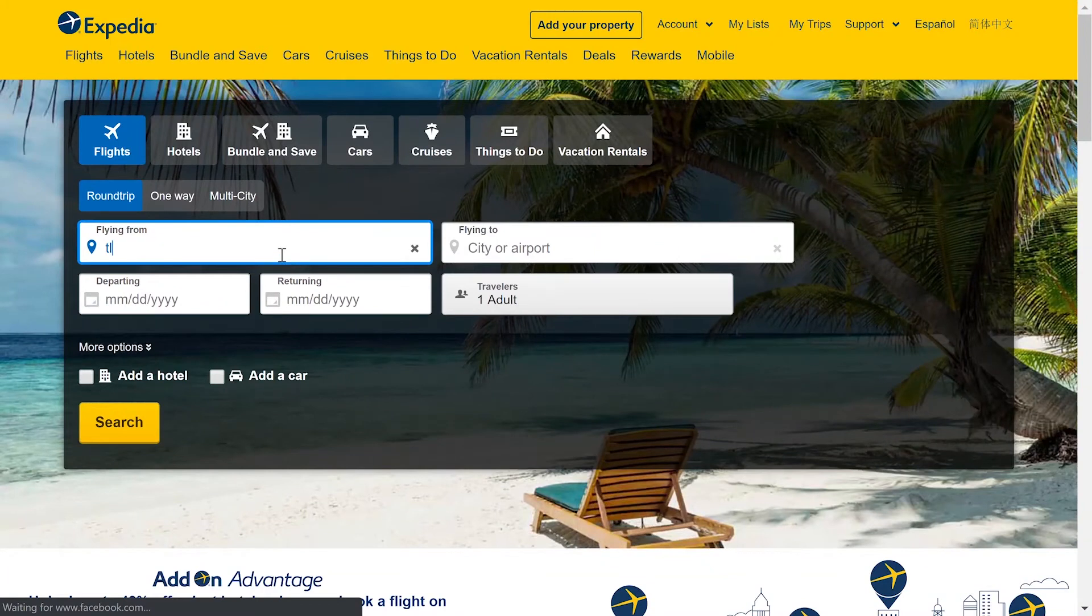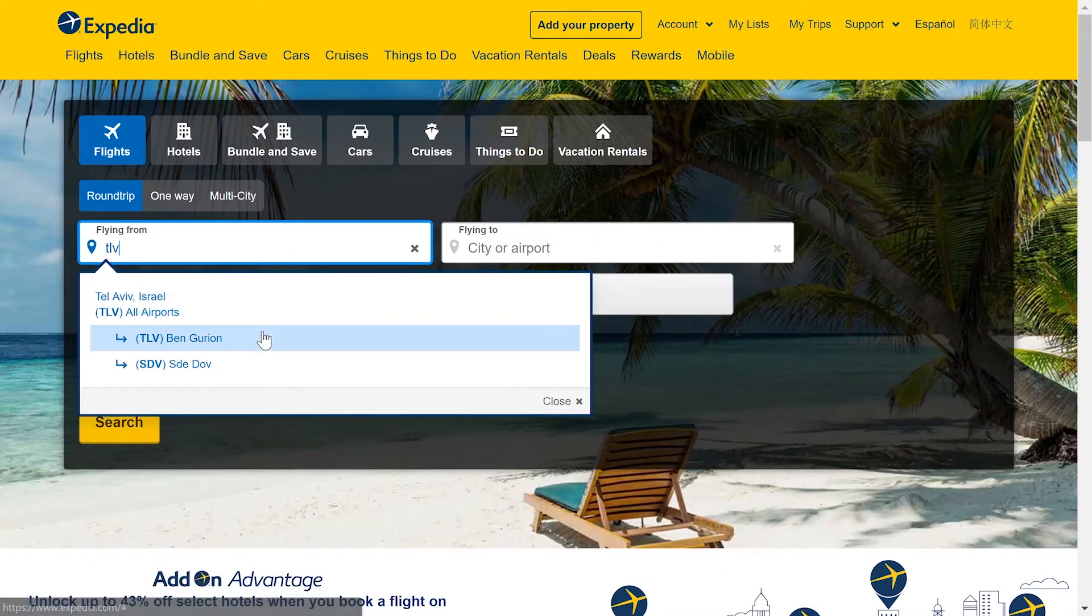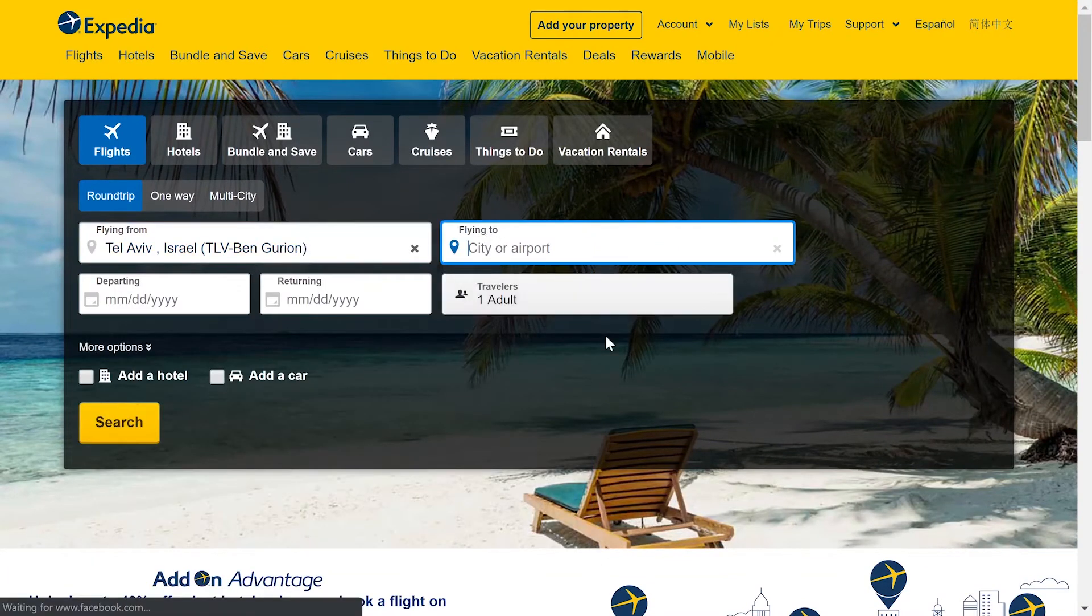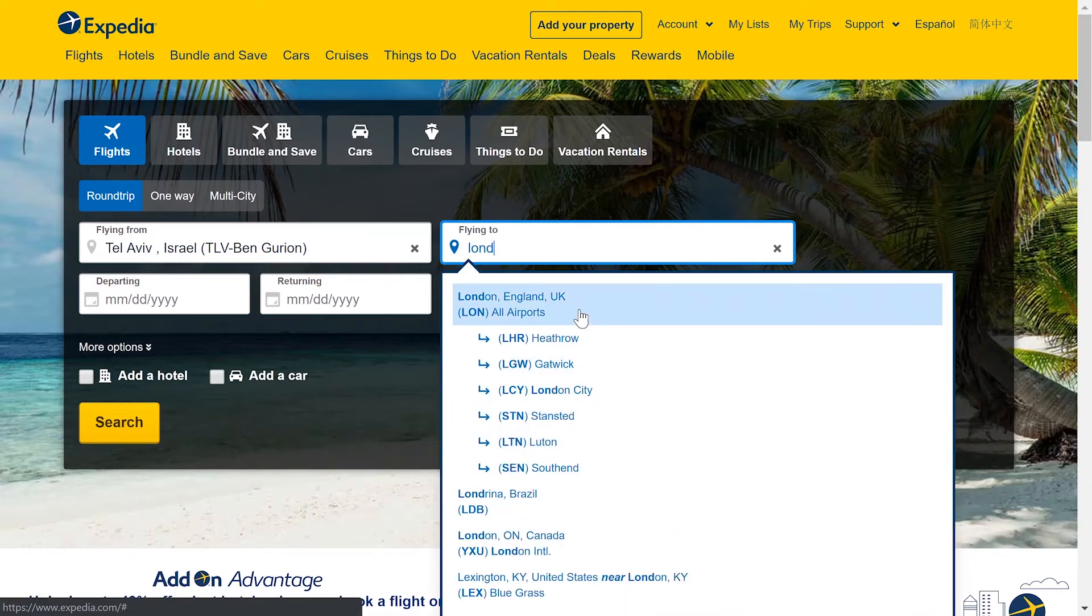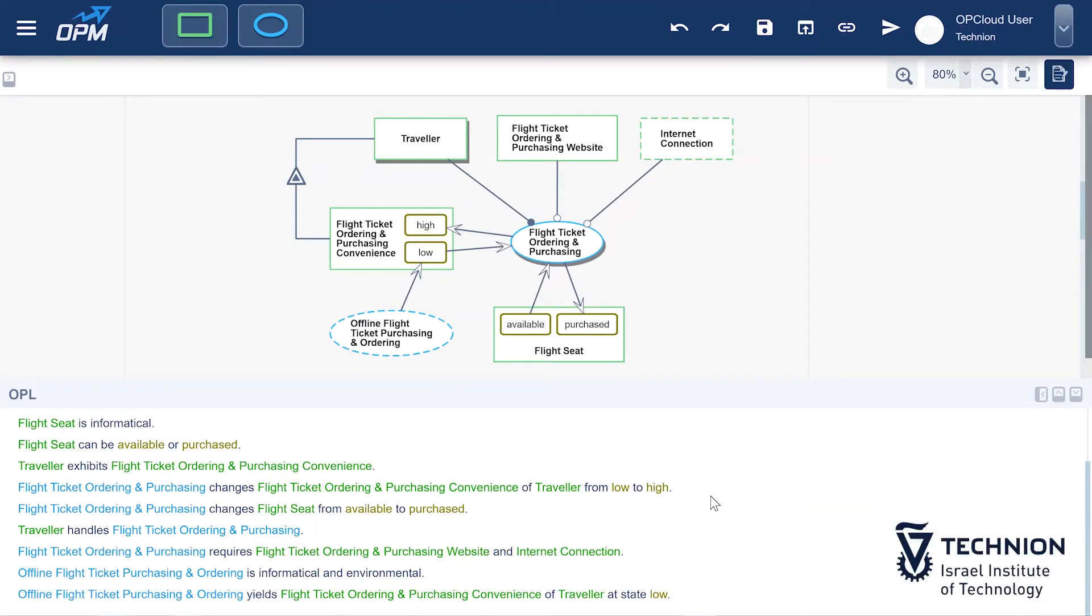So, let's order flight tickets to get to the robotics lab and take the opportunity to model the SD of the flight tickets ordering system. Unlike the system we modeled before, which was physical, this system is informatical as it focuses on ordering flight tickets rather than actually flying.